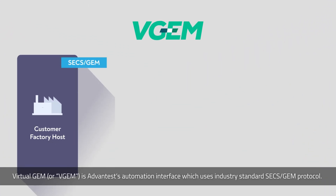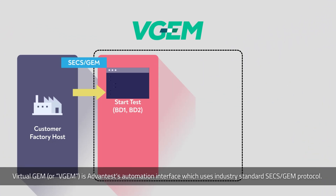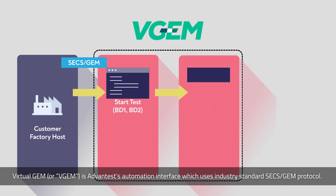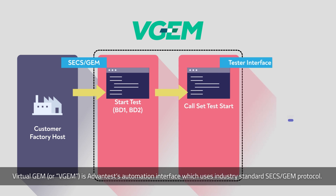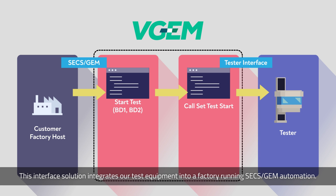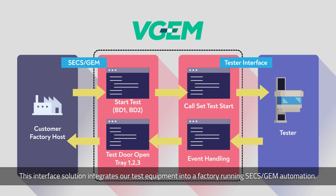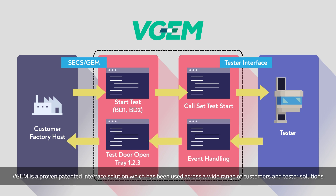Virtual GEM, or VGEM, is Advantest's automation interface, which uses the industry-standard SECS/GEM protocol. This interface solution integrates our test equipment into a factory running SECS/GEM automation. VGEM is a proven, patented interface solution, which has been used across a wide range of customers and tester solutions.